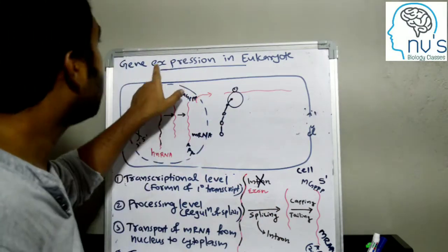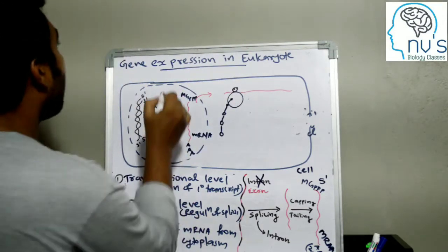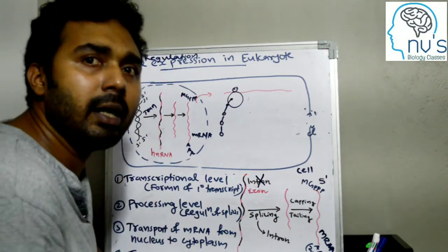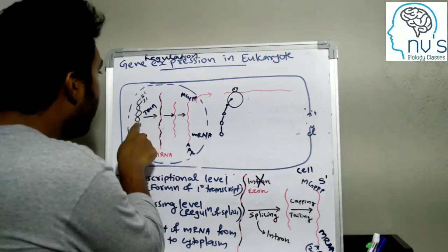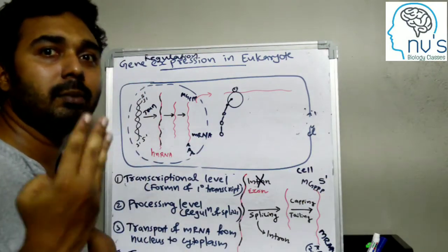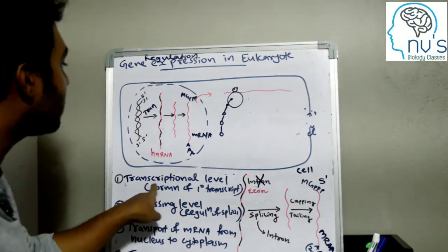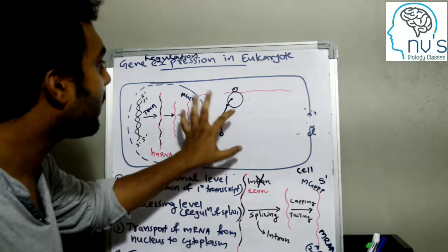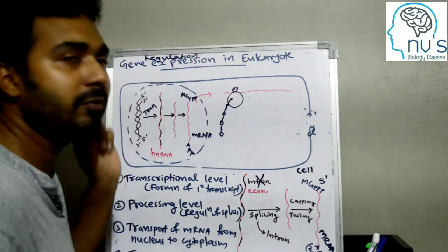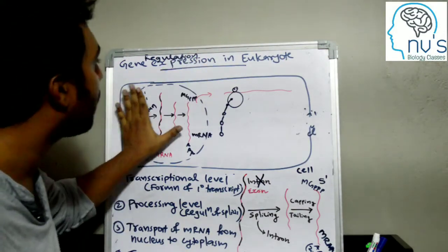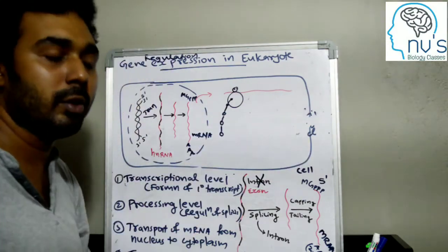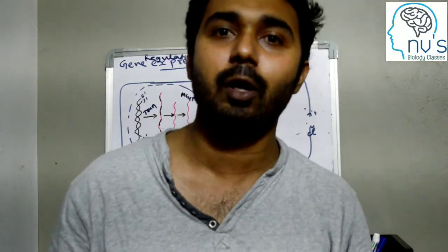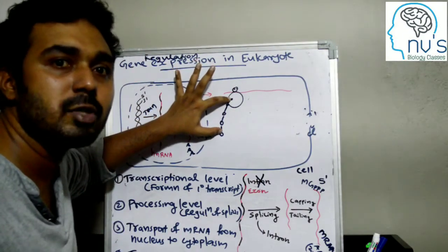This is the topic of gene expression in eukaryotes — the heading is regulation of gene expression in eukaryotes. This is how it is regulated in eukaryotes. Regulation occurs at the level of transcription, formation of primary transcript, and modification of gene expression.